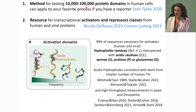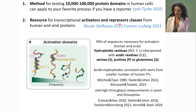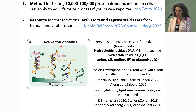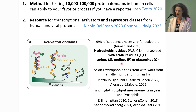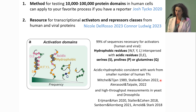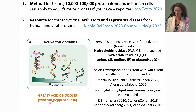With this method for testing 10,000 or 100,000 protein domains, we used it to annotate activators and repressors in human and viral proteins. For activation domains, 99% of sequences necessary for activation are a mix of hydrophobic residues, acidic residues, negatively charged amino acids, and a sprinkle of serines, prolines, and glutamines. This is consistent with the hydrophobic-acidic composition proposed by Tjian's group, Bharkane's group, Nyquist-Tybales, Han group, Kornberg, and Stark groups. I refer to these as 'greasy acidic noodles' — hydrophobic and greasy with acidic residues. Activators are one story, but repressors are a lot more interesting.